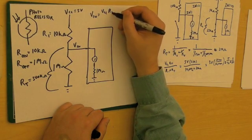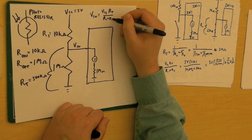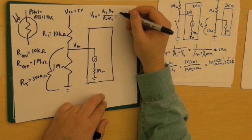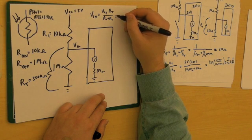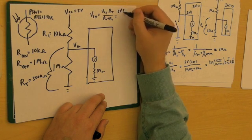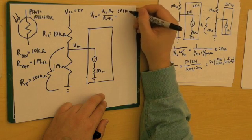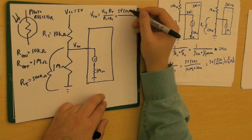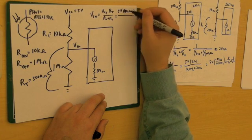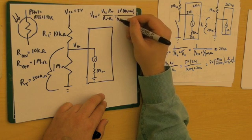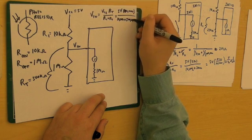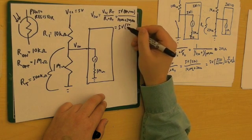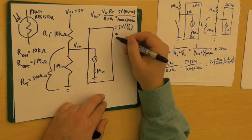I can go right to this formula. This equals approximately 5 volts times 500,000 ohms over 10,000 plus 500,000 ohms, which is 5 volts times 50 over 51, approximately equal to 5 volts.